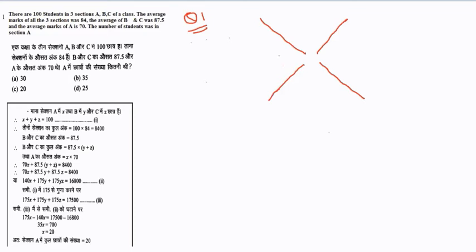The whole part is divided between two parts. We write the average of the first part, the average of the second part, and the total average of the whole. Then we find the first part quantity and the second part quantity.